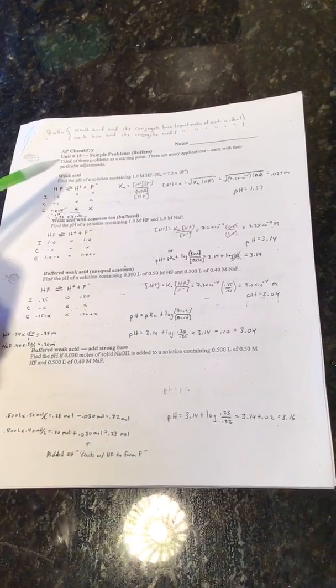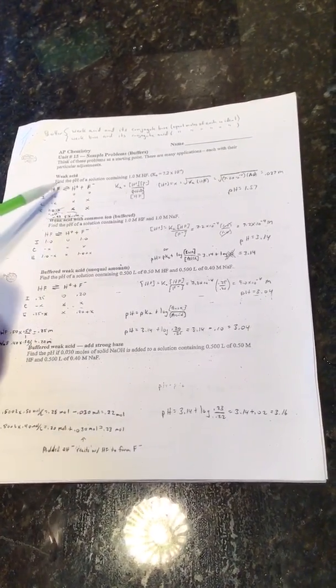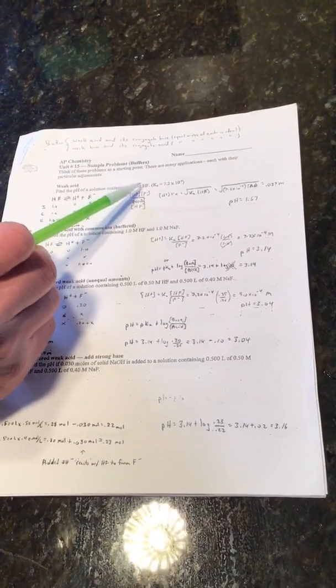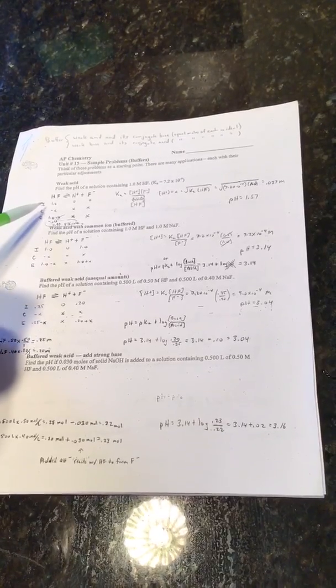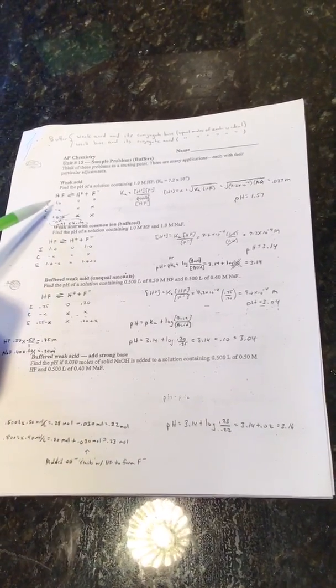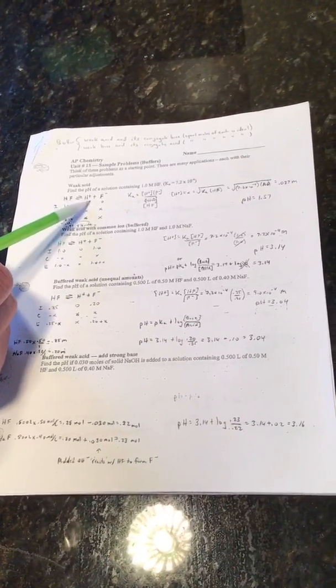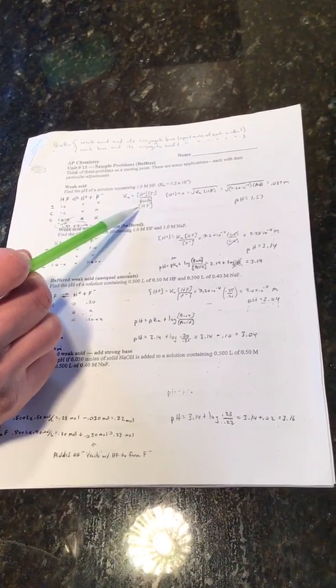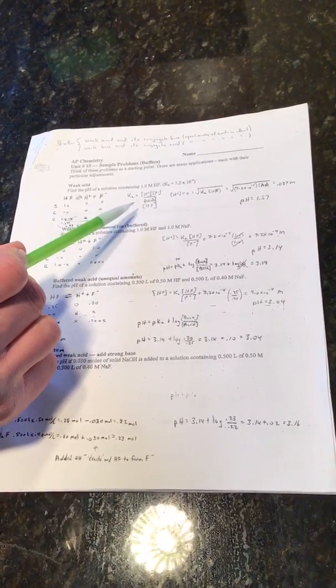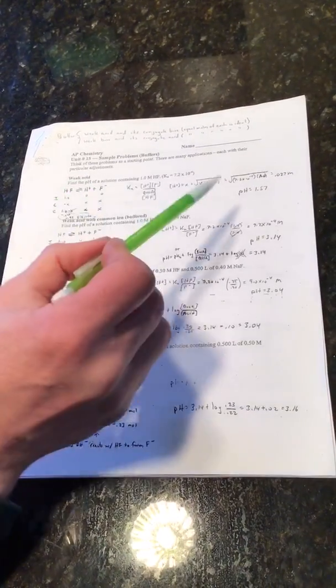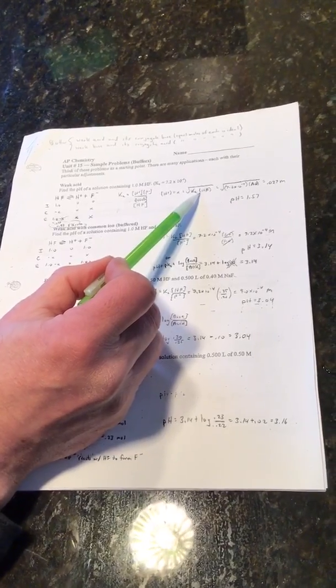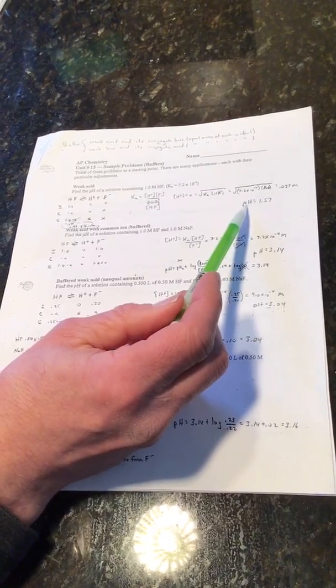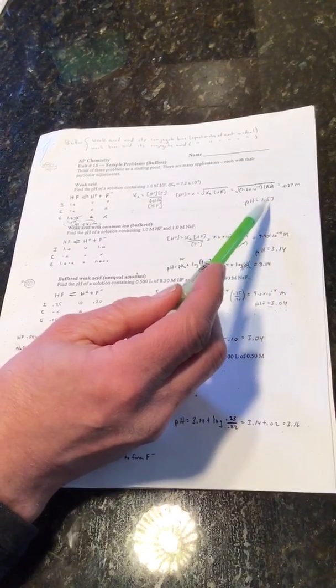Let's start out with a review of a weak acid problem from chapter 14. Find the pH of a solution containing 1.0 molar HF. Because it's a weak acid, we assume the percent dissociation will be small, so we can say Ka equals H+ times F- over HF. Or H+ is going to be the square root of Ka times HF, and we get a molarity of 0.027 molar, which corresponds to a pH of 1.57.